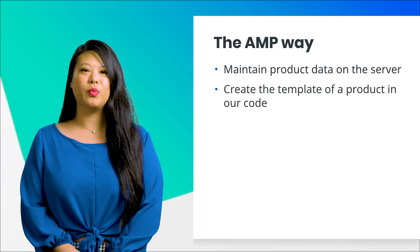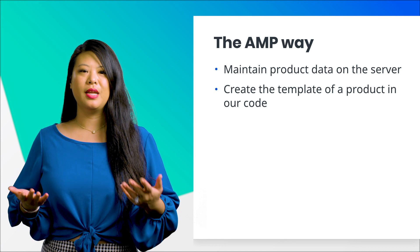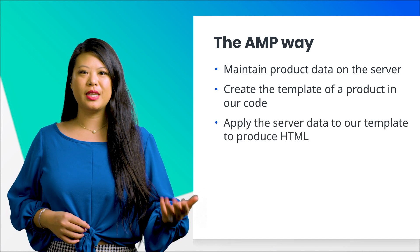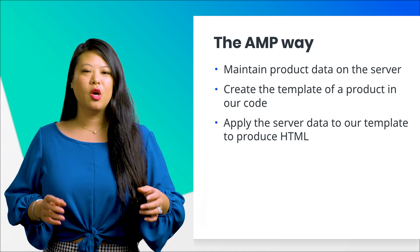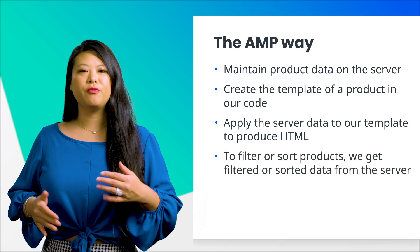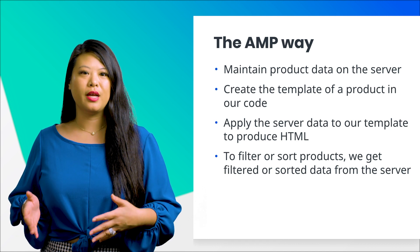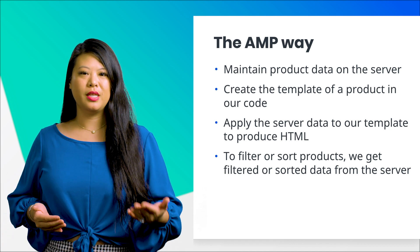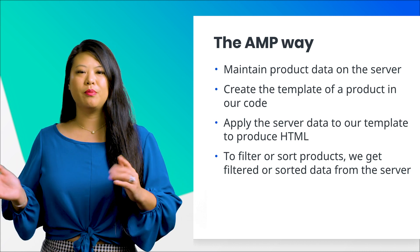In our site code, we use HTML, CSS, and AMP components to define a template that describes how a single product looks on our site. When the server data arrives, we can apply the information about each product to our template, which produces HTML that AMP displays on our site. So to filter or sort our products, we'll just request filtered or sorted data from the server, and then apply the new batch of data to our templates to produce different HTML and display it on the screen in place of the original.